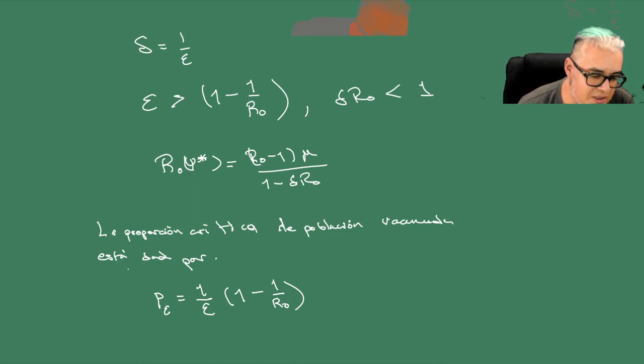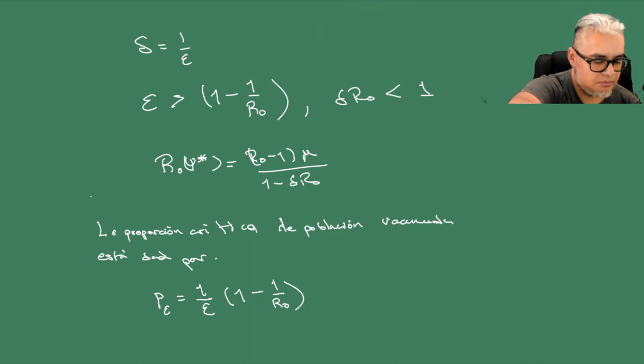¿Qué está pasando con este umbral crítico? Eso únicamente nos dice cuándo la proporción que tenemos que dar para que el R0 de la XI sea menor que 1. Si suponemos que la efectividad de la vacuna no es ni siquiera cercano a 1, podríamos obtener un comportamiento del sistema inesperado, que es lo que se conoce como una bifurcación hacia atrás.